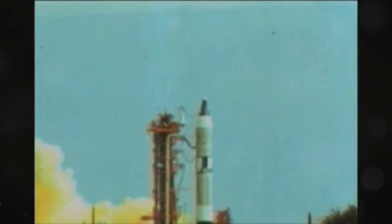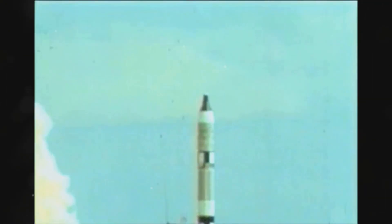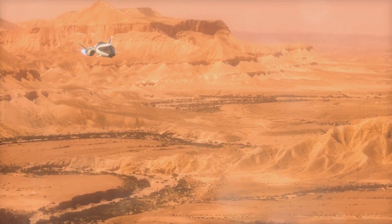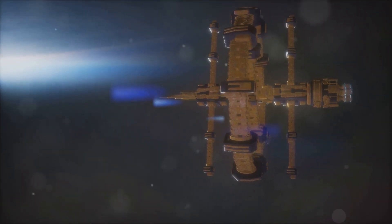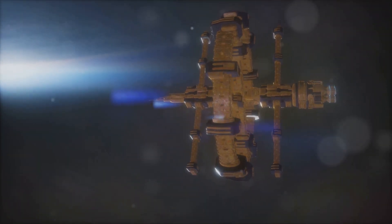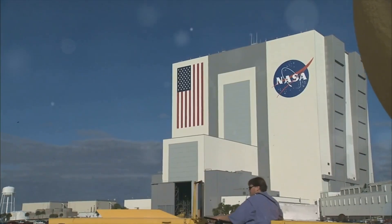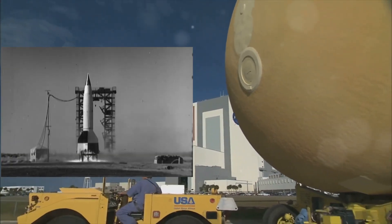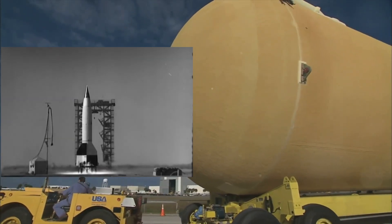The rise of Nazi Germany cast a dark cloud over von Braun's pursuit of space exploration. Recognizing the potential of his rocketry work for military applications, the Nazi regime offered him significant resources and support in exchange for his expertise. This Faustian bargain, driven by von Braun's ambition and the complexities of wartime Germany, led to the development of the V-2 rocket.